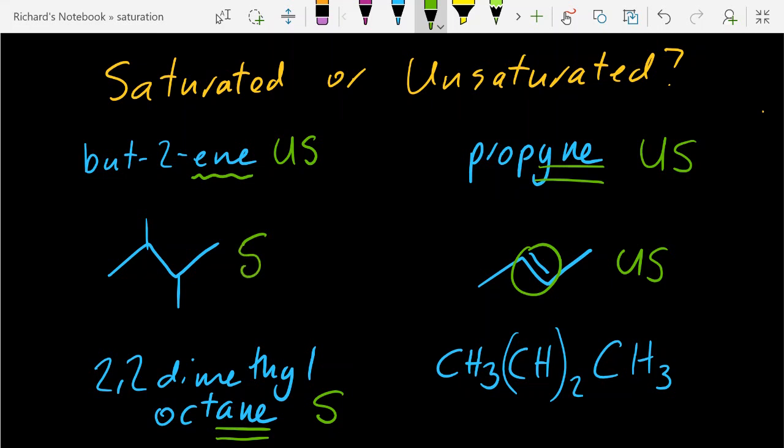Which just leaves this weird one here. Now it's a condensed formula. I think you're going to have to draw it out to see what's going on. Yeah, that doesn't seem to work. This carbon here and there only have three bonds. It must be a double bond here, so that makes it an alkene, which means it's unsaturated.